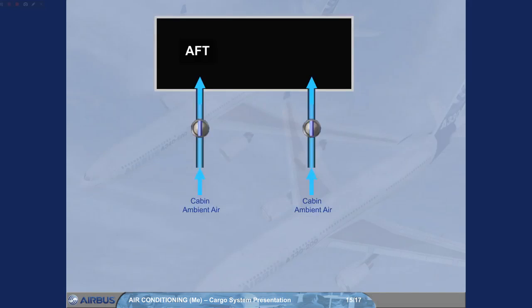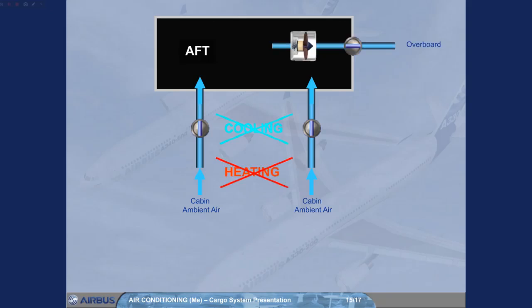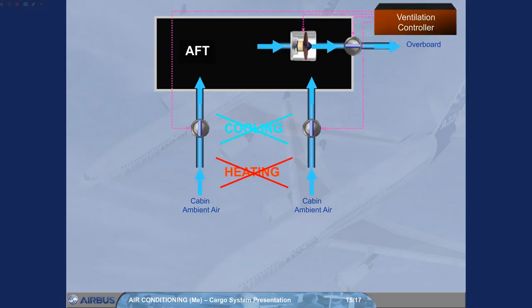For the aft cargo compartment, the ventilation is similar to that of the forward cargo compartment, except that for the air entering there are no cooling and no heating supplies, and also for the extraction the air is sent overboard to the aft outflow valve area. As for the other cargoes, the ventilation controller controls the valves and the fan. Note: the aft cargo compartment indications are not represented on the ECAM COND page.